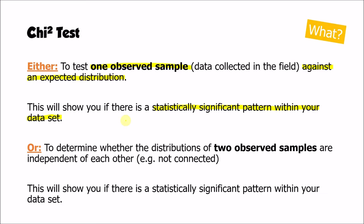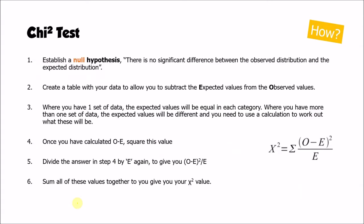Another situation where we can use the chi-squared test is to determine whether the distributions of two samples are connected or independent. So if we've collected data from two places or at two points in time, this tells us whether there's a statistically significant pattern — does the data for one place or time vary significantly from the other? That second approach is a little more complicated, and when we have two sets of data we have to do something different with the expected values.